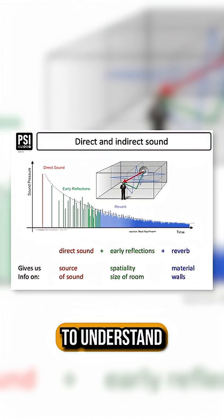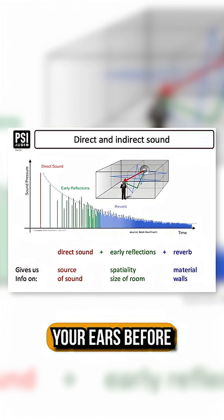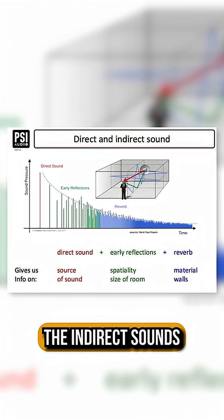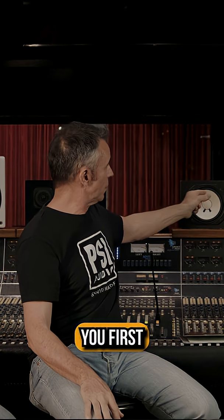So there's all these things to deal with in a room. The first thing to understand is that the direct sound on any transient will reach your ears before the indirect sound. And our brain is very capable of differentiating the direct sound, that gives you information on source of sound, from the indirect sound that gives you information from the spatiality. So it comes a bit earlier — you first have the direct sound and then first reflections.